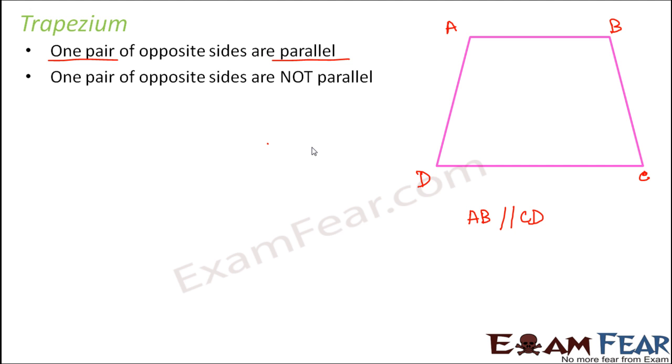So here there is a condition that only one pair should be parallel and the other pair should not be parallel. But the non-parallel sides are equal in length. The non-parallel sides are AD and BC, so they are equal in length.